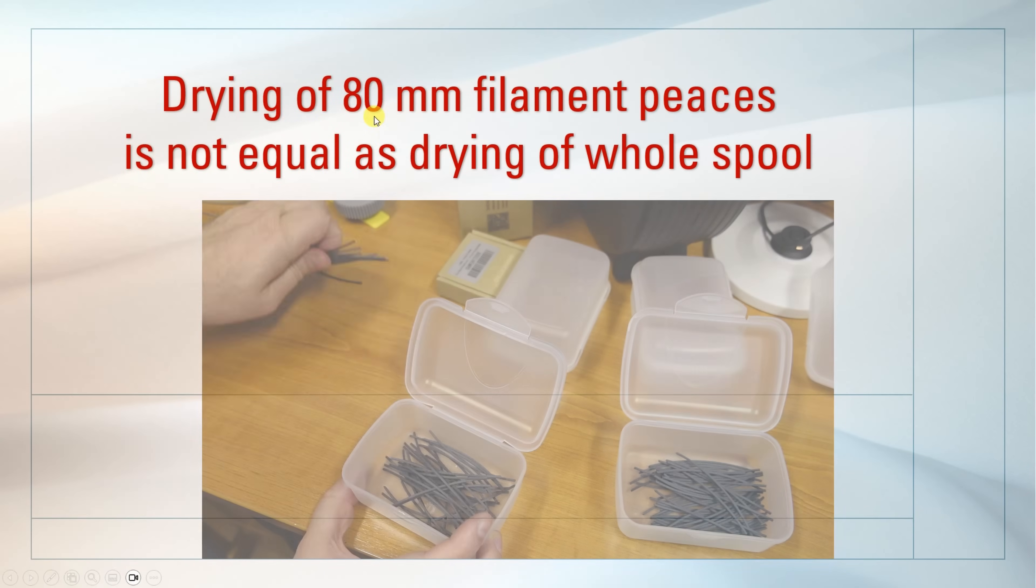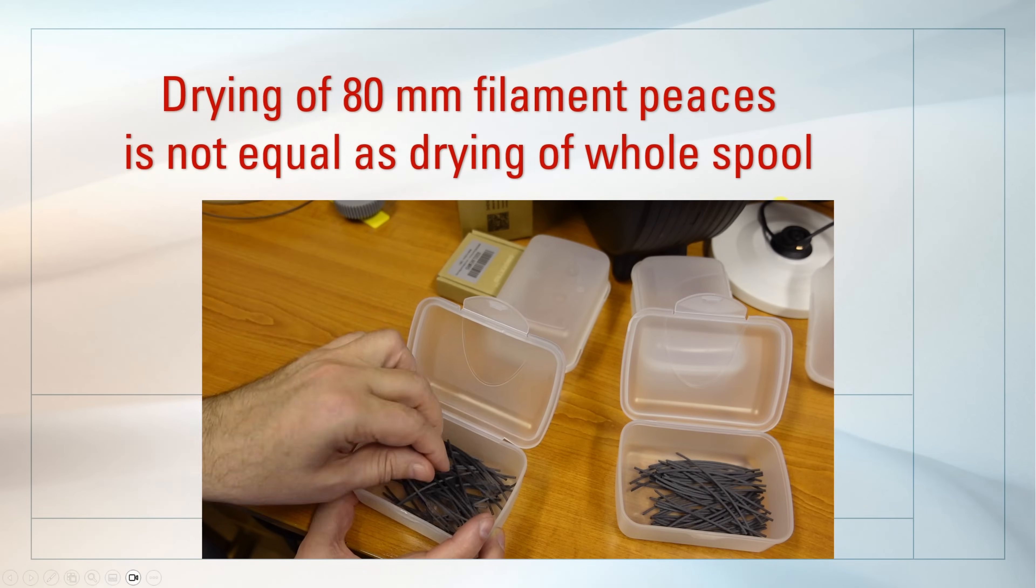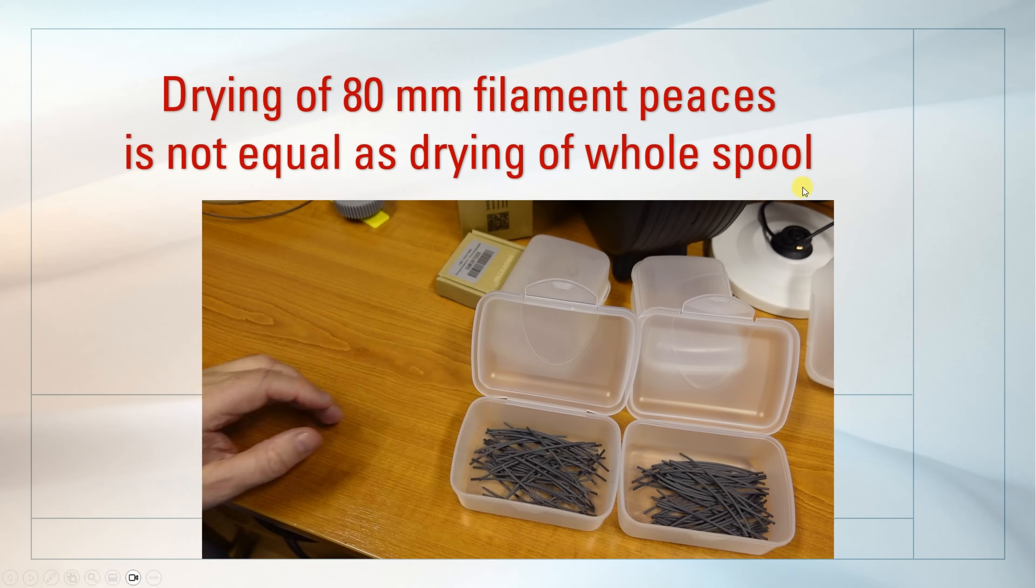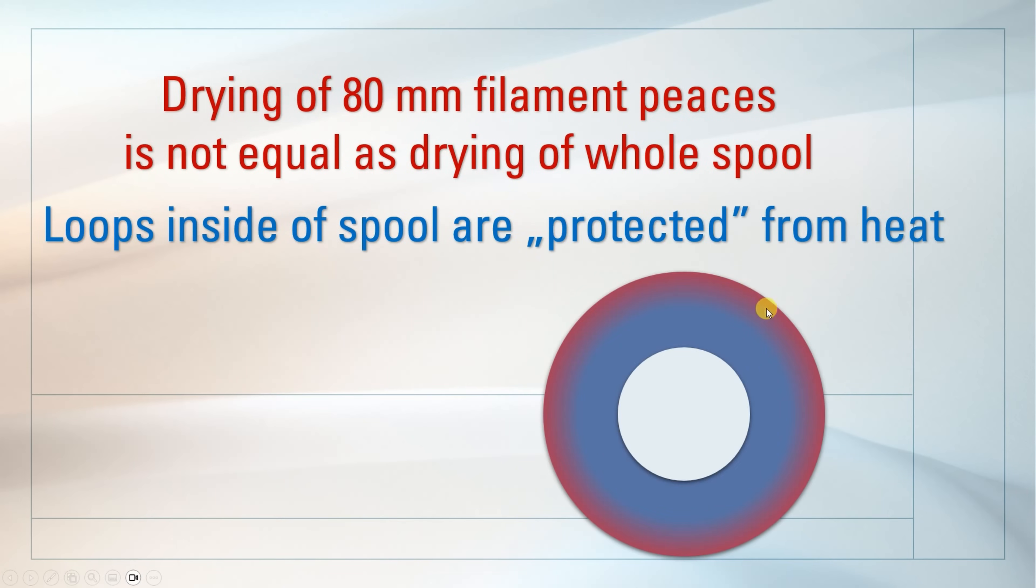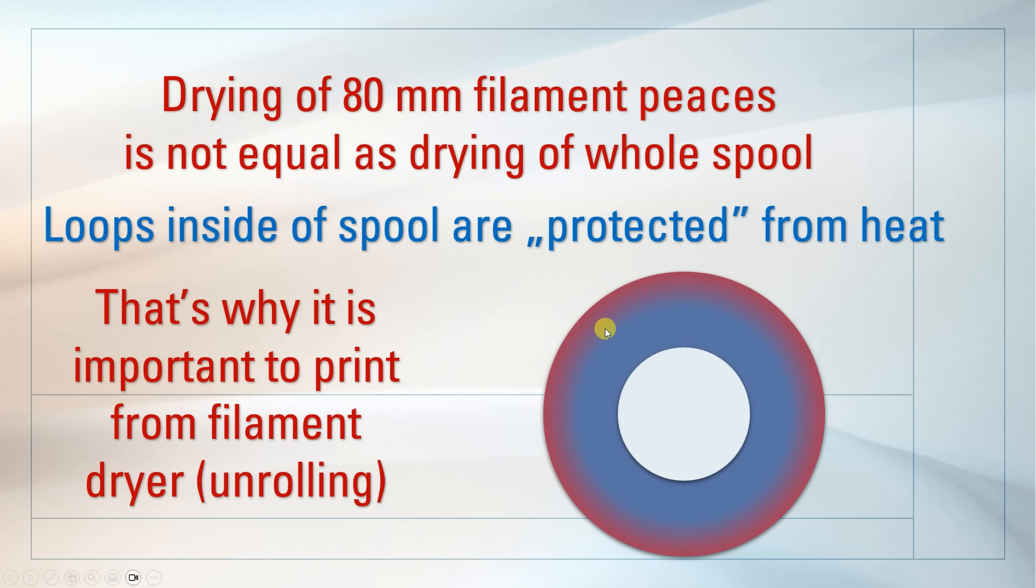Now drying of those 80mm filament pieces is not really equal like drying of the whole spool, because loops inside the spool are partly protected from the heat. That's why it is important to use those drying times. And after this, continue the printing from the filament dryer, because then it will be unrolled and it will equally dry the top loops of the filament.